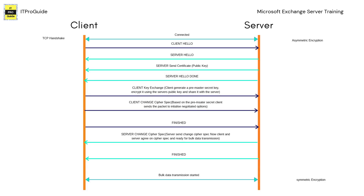Now let's see how the TLS process works between a client and a server. Once a connection is established — whether between a client and server or between two mail servers in Exchange Server perspective — the client sends a Hello message to the server that includes the supported SSL information, protocol versions, and cipher suites supported. Then the server sends a Hello with one of the selected options that the client put forward in the previous step.